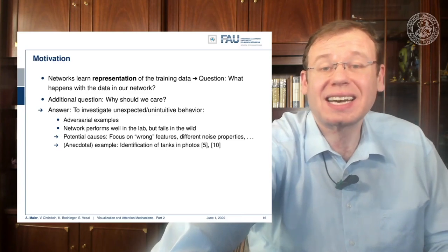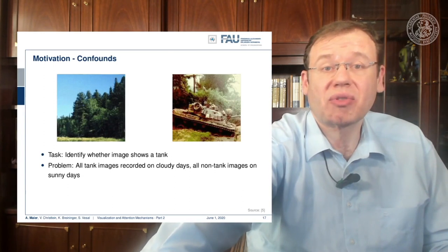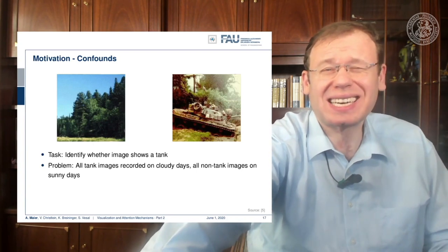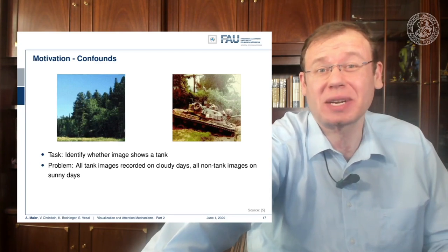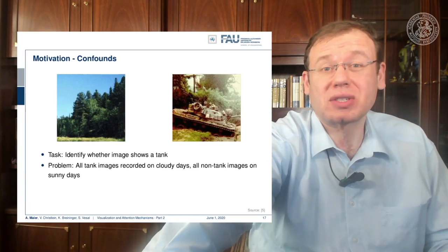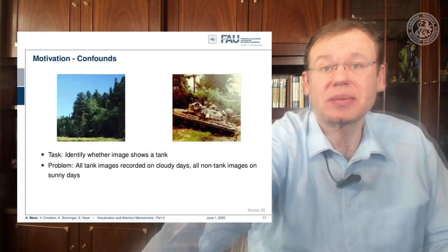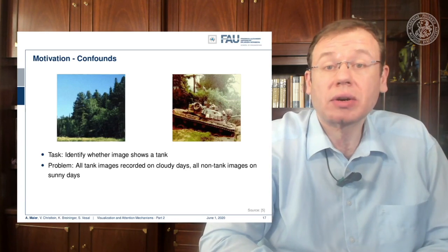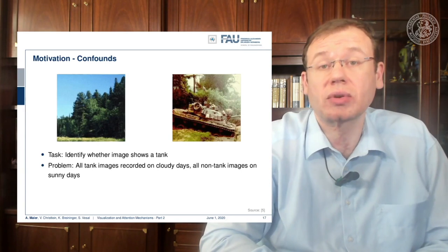For example, the identification of tanks in photos. This is an example from Neil Fraser's website, a Google developer, and I'm not entirely sure if this really happened or whether this is just an urban legend. The legend goes like this: people in the Pentagon wanted to train a neural network to identify tanks on images. What could you do in order to construct such a dataset?